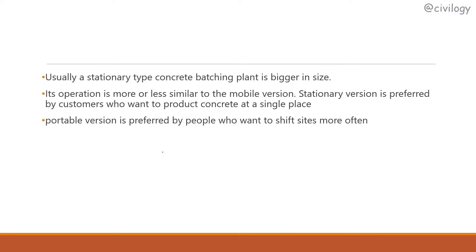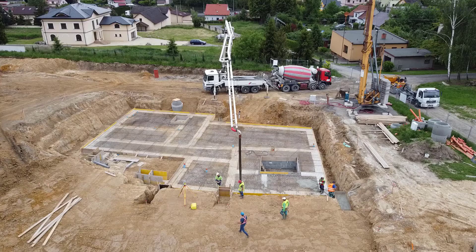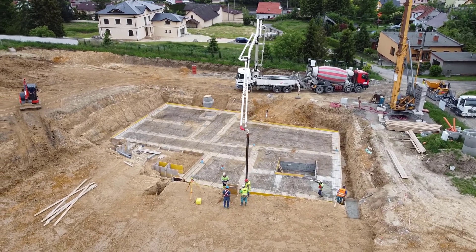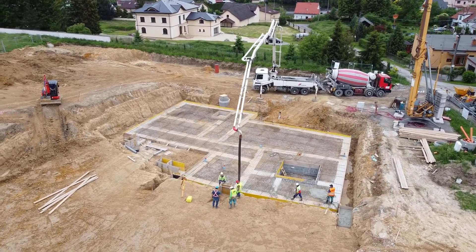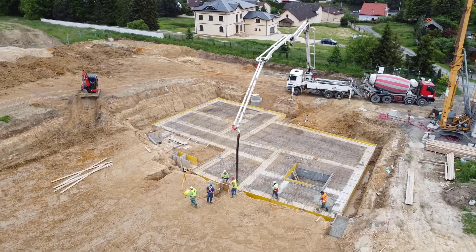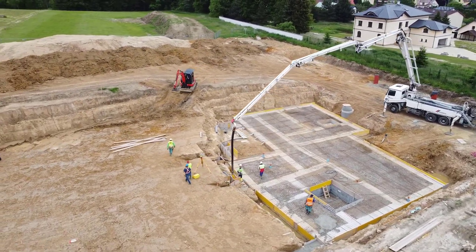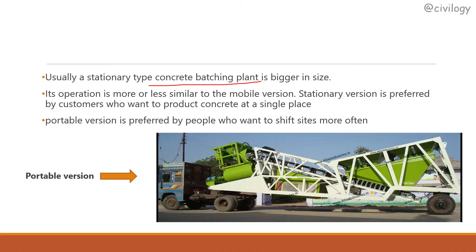Usually a stationary type concrete batching plant is bigger in size. Its operation is more or less similar to the mobile version, but the stationary version is preferred by customers who want to produce concrete at a single place. The portable version is preferred by people who want to shift sites more often. In the portable version, the aggregates and the mixture are carried to the site and mixed at the site.